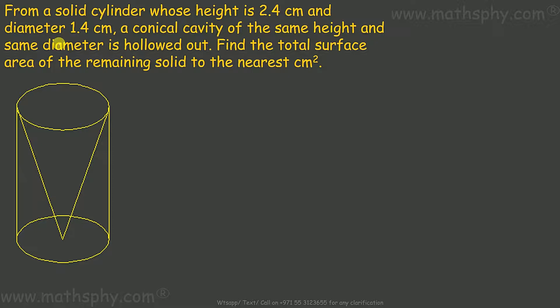It says height is 2.4 and diameter is 1.4. Diameter is this, 1.4, so radius would be 0.7 and height is 2.4. Height of the cone is also 2.4, so total height from top to bottom. This is a solid cylinder, it means it has a base.